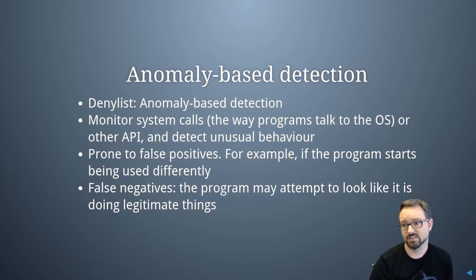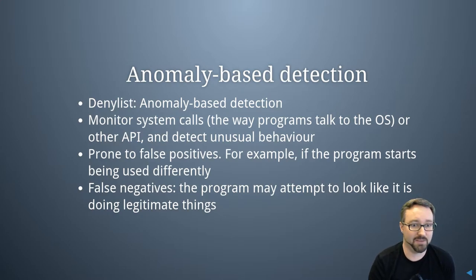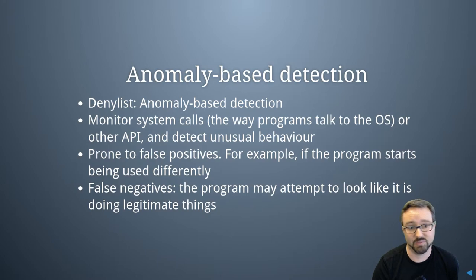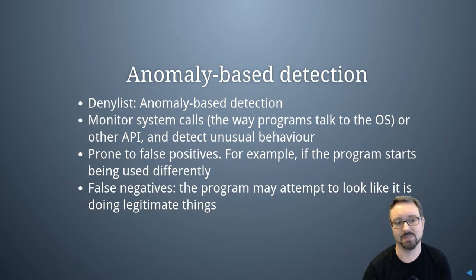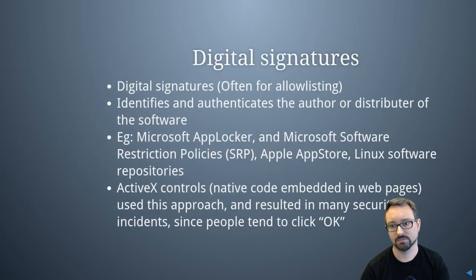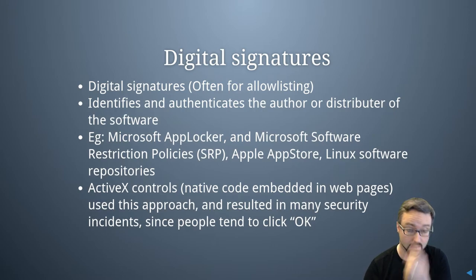The problem with anomaly-based detection is that it's prone to false positives — as soon as a program starts being used differently, it might trigger the rules. You can also have false negatives, where a malicious program is aware of the anomaly detection in place and is simply careful not to trigger those rules.